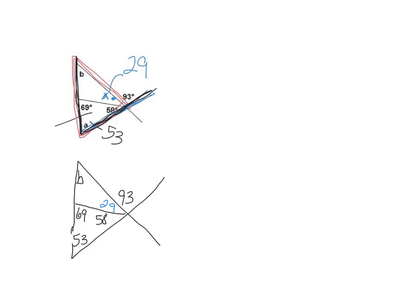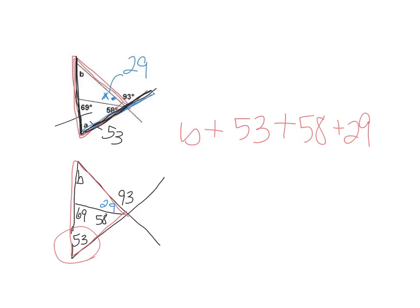In the previous slide I found b using exterior angles: 93 equals 53 plus b. I can also find b by looking at the red triangle directly: b plus 53 plus 58 plus 29 equals 180. Subtracting all those values, b equals 40. Both methods agree.